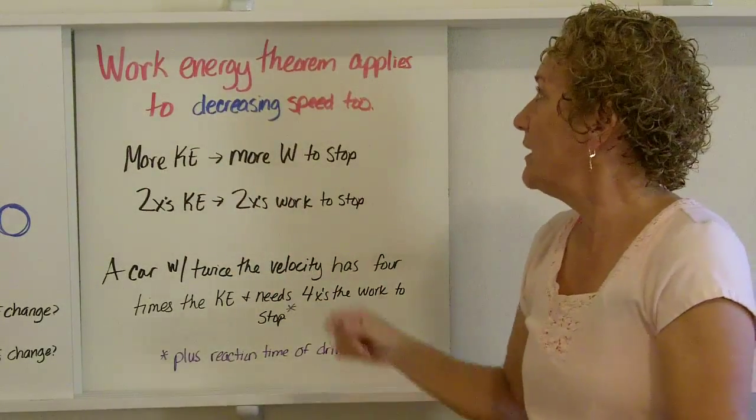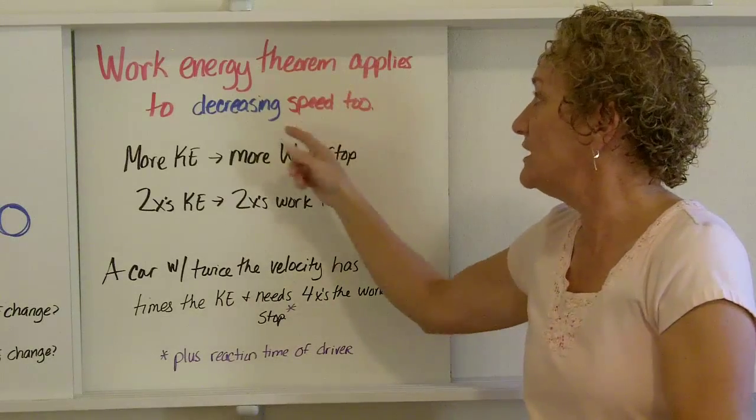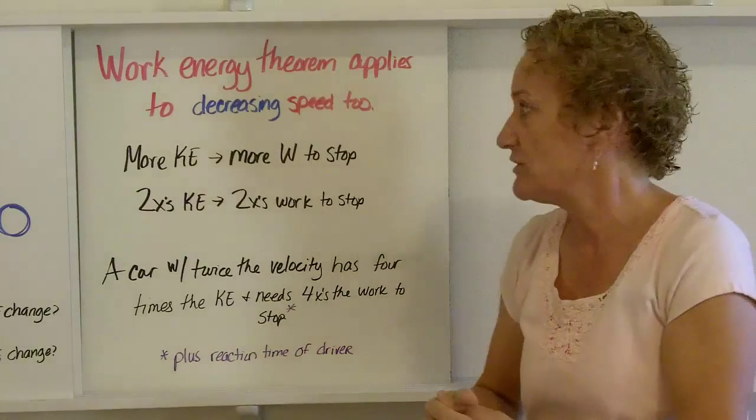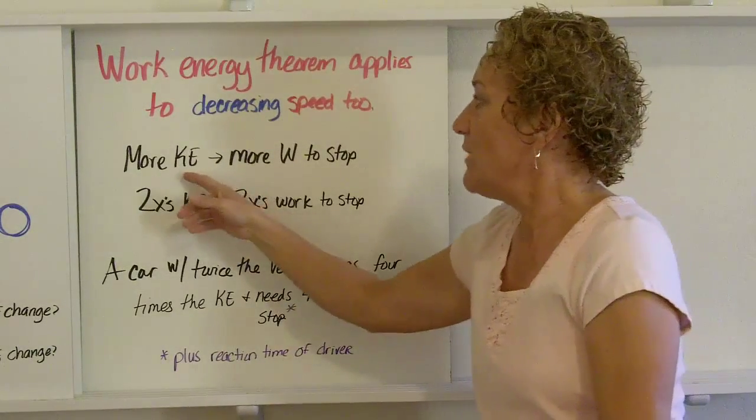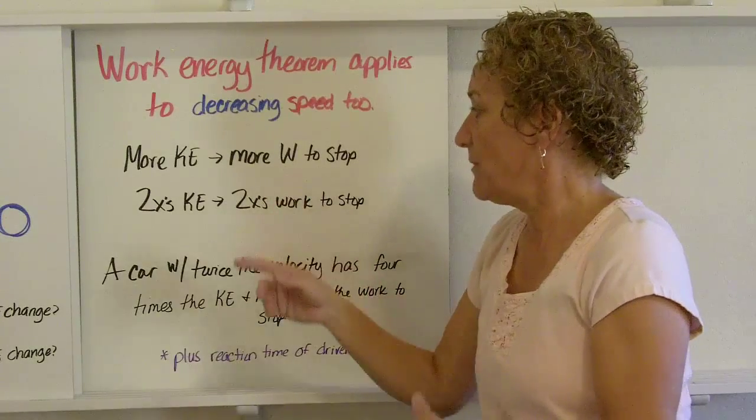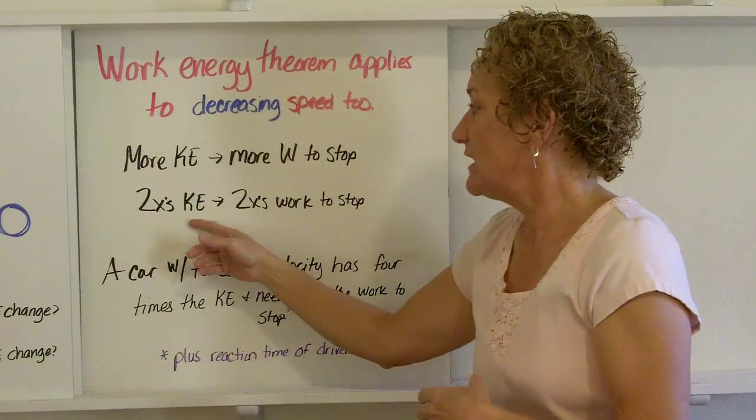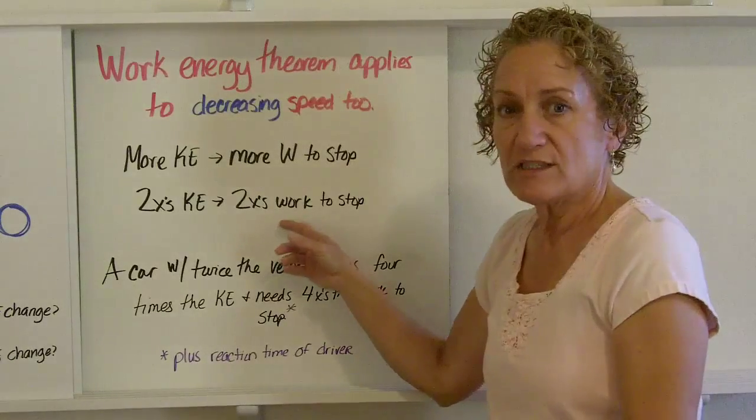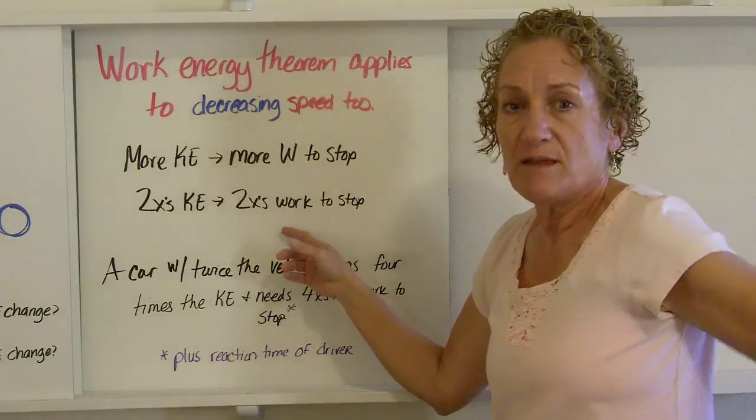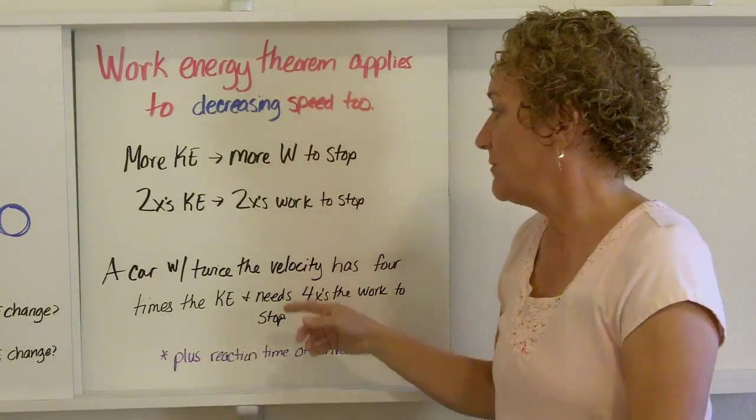The work-energy theorem applies to decreasing speed as well. So it's not just when things are speeding up, it's when things are slowing down. If you have more kinetic energy, it's going to take more work to stop it. Twice the kinetic energy, twice the work to stop. Five times the kinetic energy, five times the work to stop. That's what the work-energy theorem says.